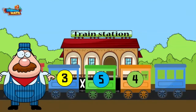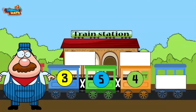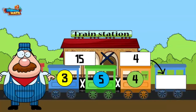Here is the equation: three times five times four. The associative property says we can group the factors in any way and still get the same answer. Let's try it out — the first group is three times five, which equals fifteen. Then multiply the fifteen by four.